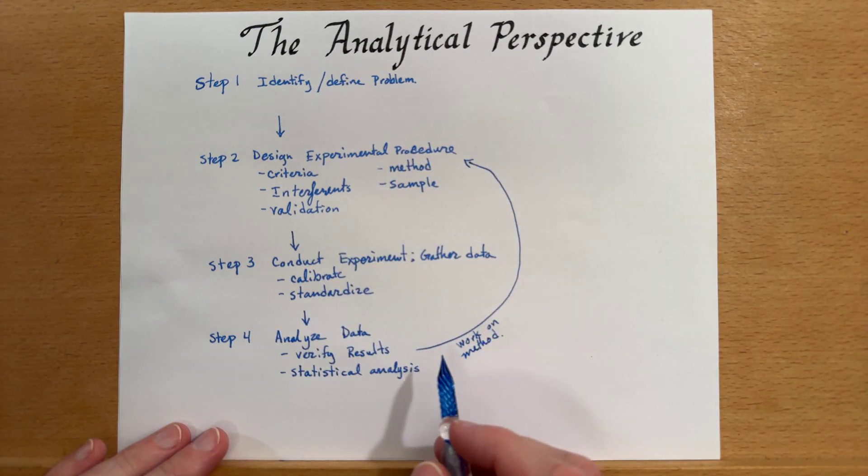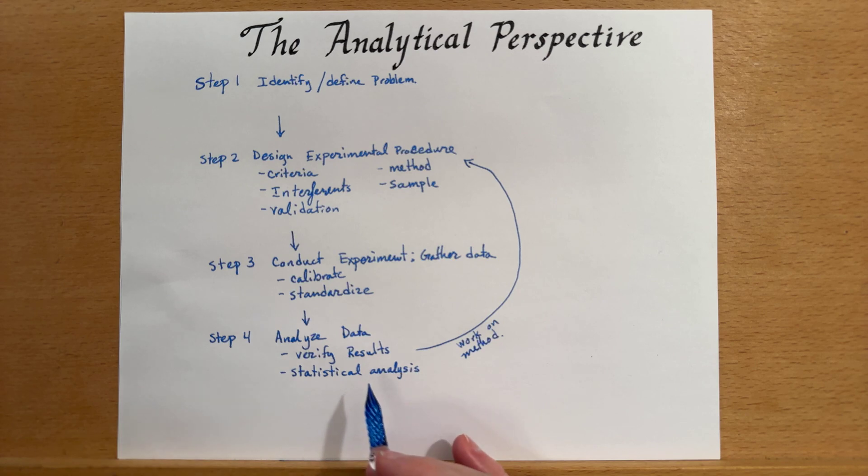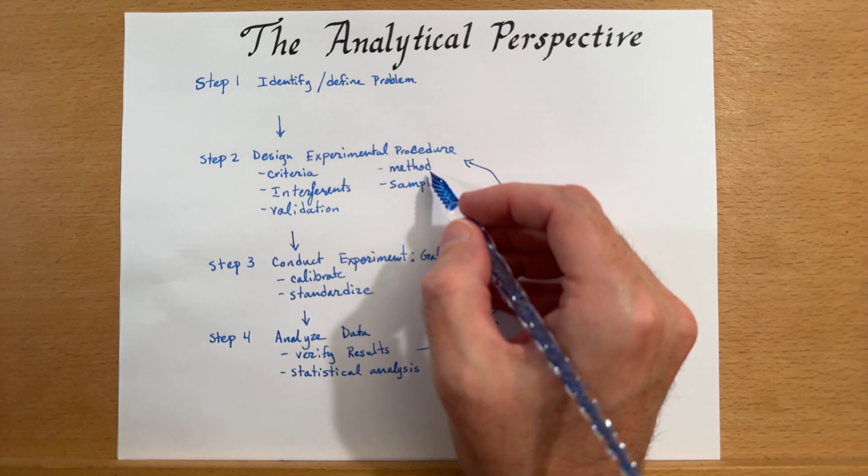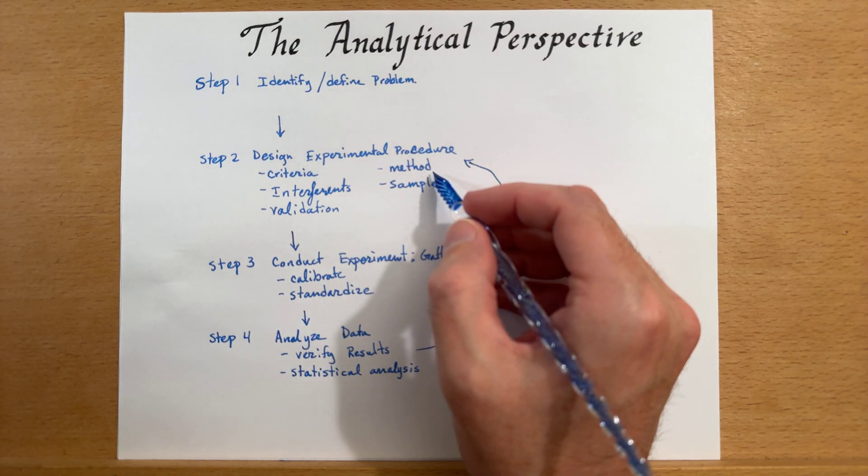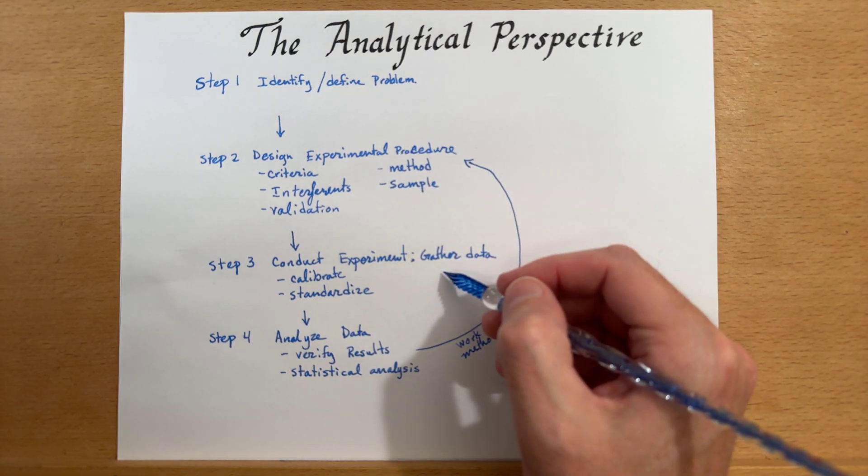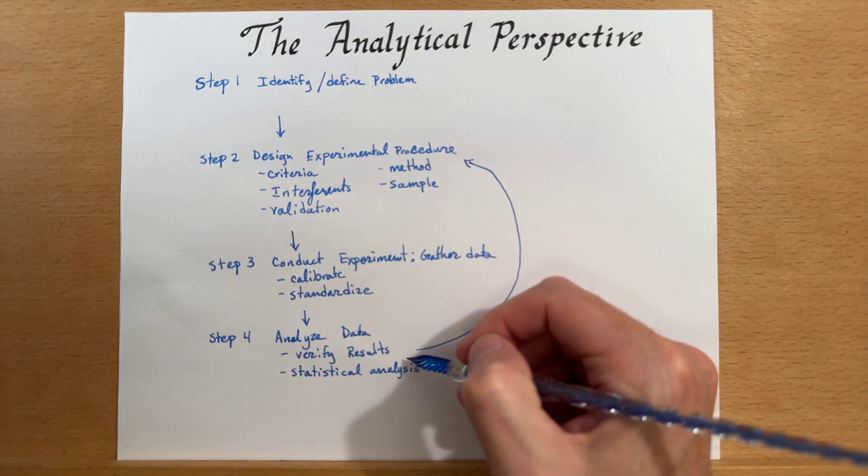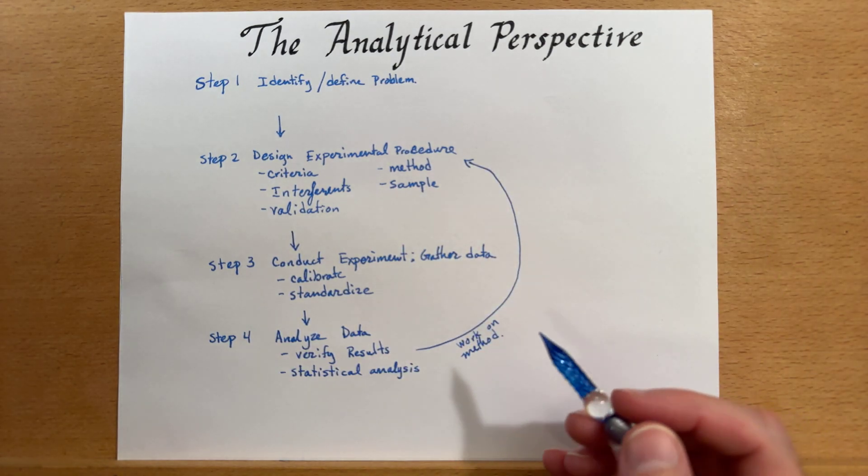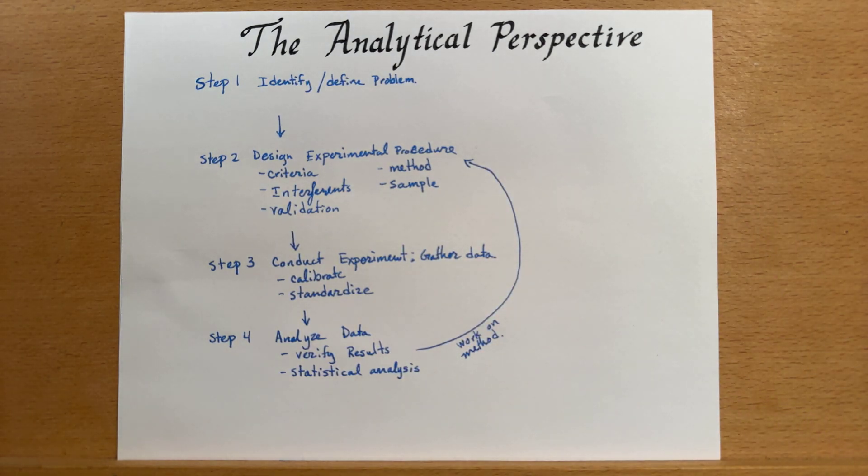So, once we've analyzed the data, we'll have a better understanding of what's going on. And we may need to change our method going forward. Once we change our method, we will then have to collect more data, analyze that data. And then, if necessary, we can repeat it again until we actually have solved our problem.